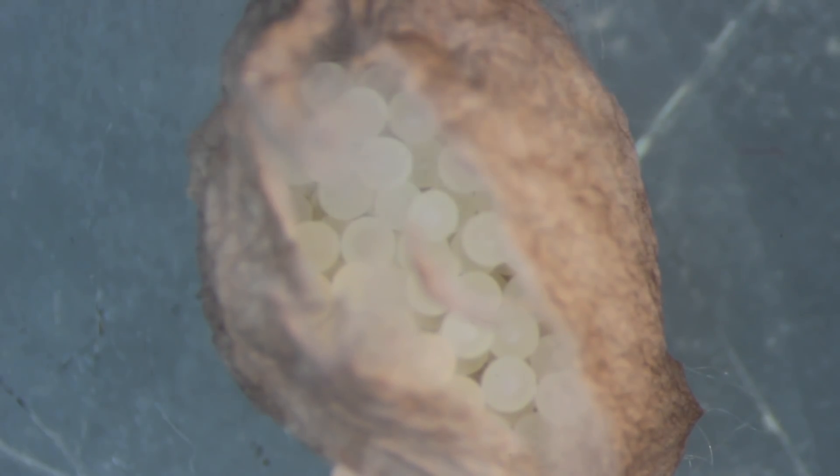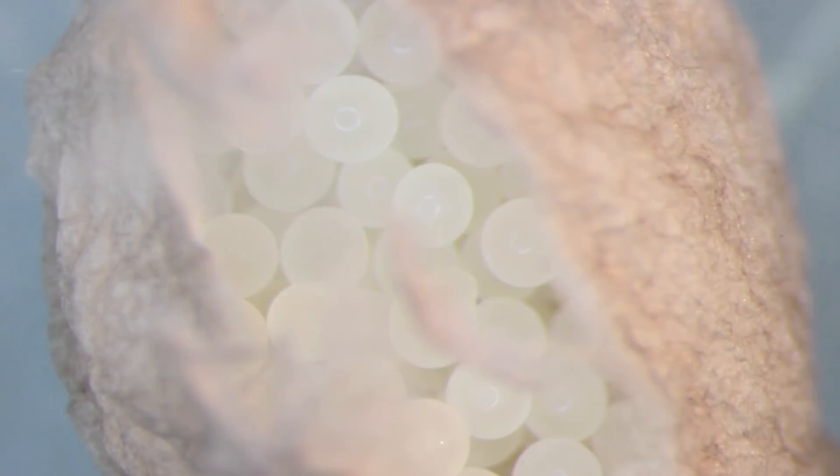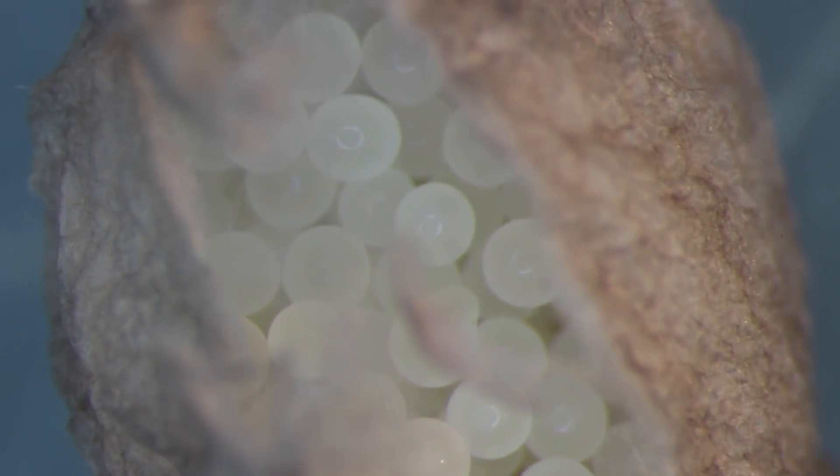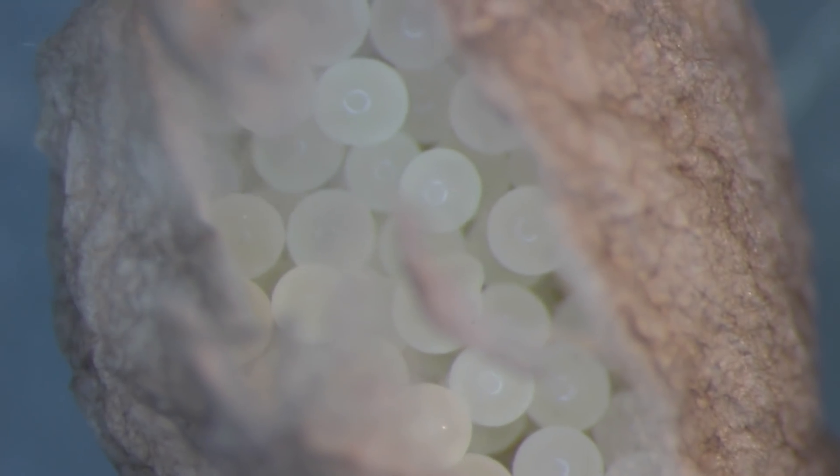So I see some little black things. What are those little black things? Those are just shadows and gaps between the eggs. So this is 10x, this is 16, and we're going to go to 40.